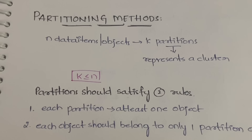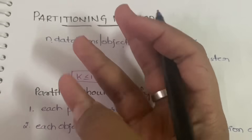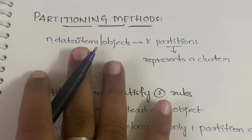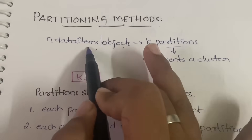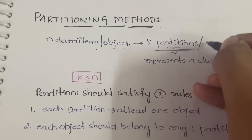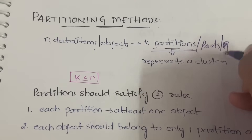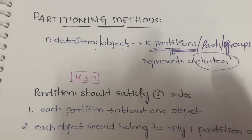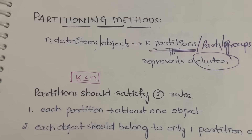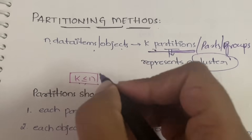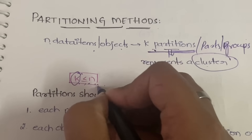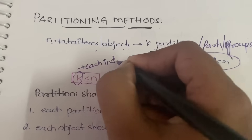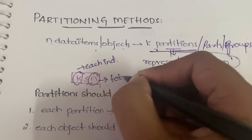First, what do you mean by partitioning? You are dividing the data. You will have n data items or objects, and they will be divided into k partitions, or clusters, or groups. Each partition will represent one cluster, and k is less than or equal to n — meaning the size of each individual cluster should be less than or equal to n, where n is the total number of data items.